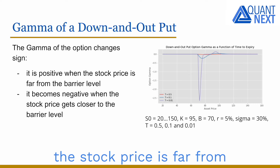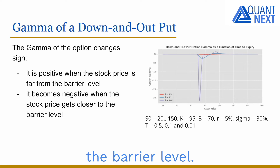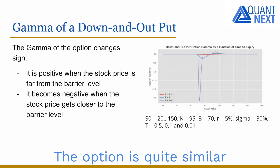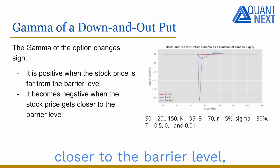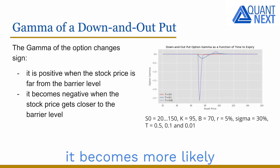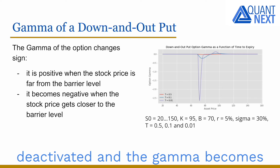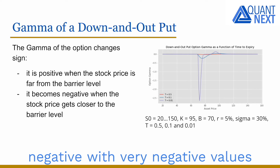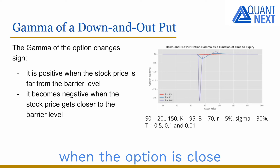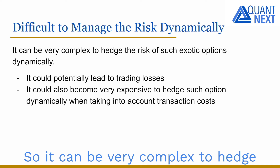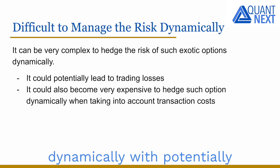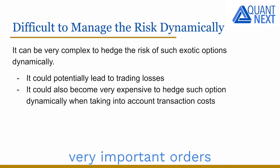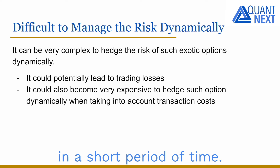The gamma is positive when the stock price is far from the barrier level, where the option is quite similar to a Vanilla put option. But when the stock price gets closer to the barrier level, it becomes more likely that the option will be deactivated and the gamma becomes negative, with very negative values when the option is close to expiry. So it can be very complex to hedge the risk of such options dynamically, with potentially very important orders to be executed in a short period of time.